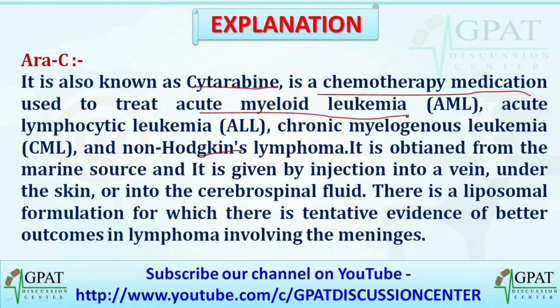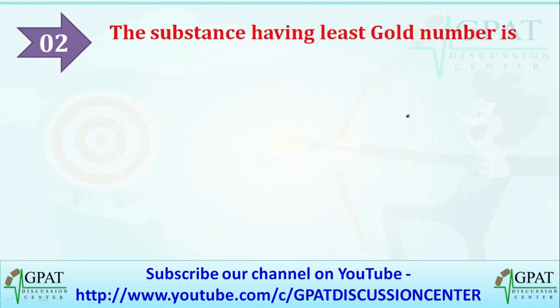Cytarabine is also used in non-Hodgkin's lymphoma. It is obtained from a marine source and is given by injection into a vein, under the skin, or into the cerebrospinal fluid. There is a liposomal formulation for which there is tentative evidence of better outcomes in lymphoma involving the meninges.